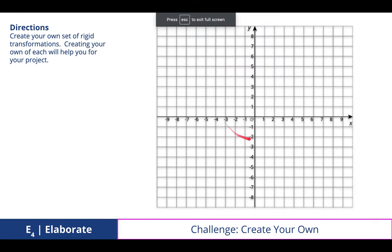I've also provided a blank grid sheet for you, a geometric coordinate plane rather, for you to create your own set of rigid transformations, one of each type using a polygon of your choice. Again, this will help you with your tessellation geometric art project.